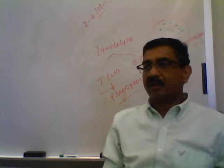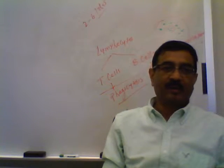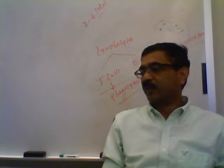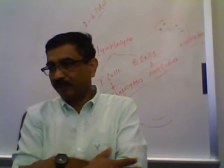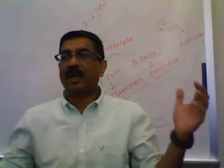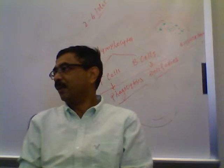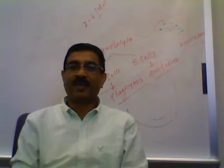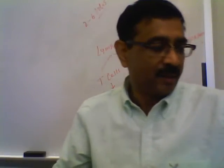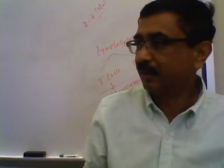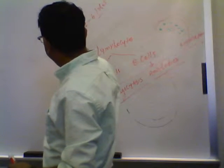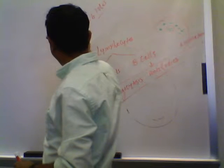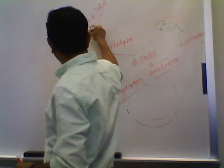Monocytes are the largest in size. Some monocytes exit the blood and enter into the tissue, where they become giant cells called macrophages. So macrophages come from monocytes — sometimes monocytes come out from the blood vessel and enter tissue to become tissue macrophages.